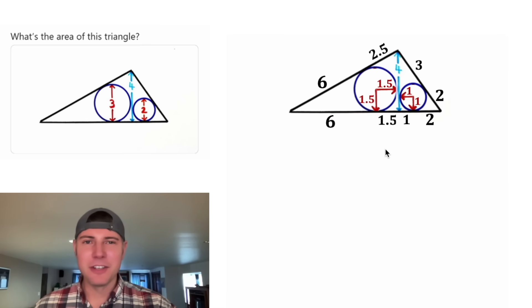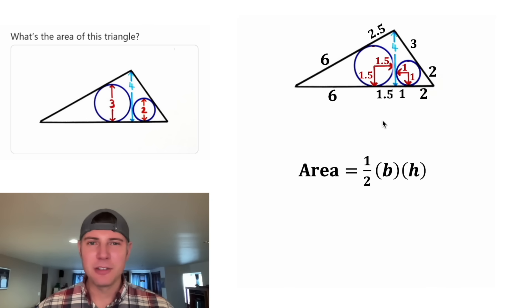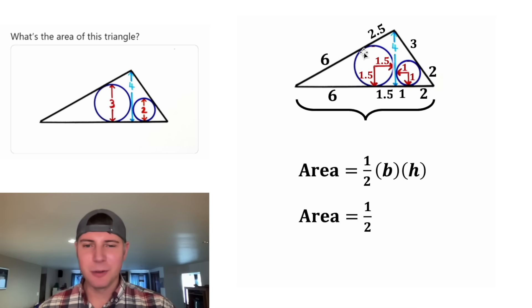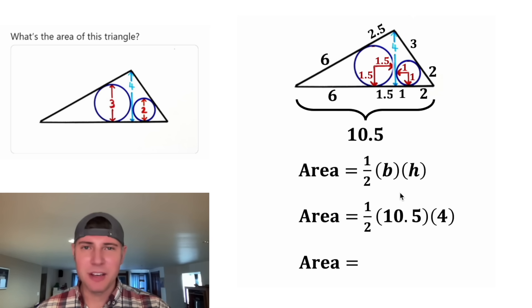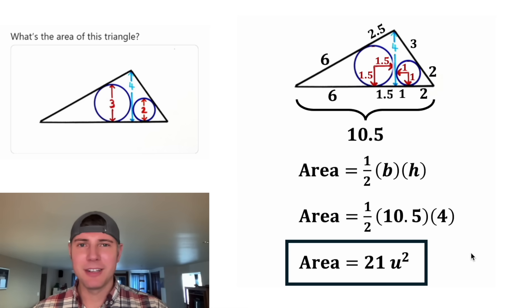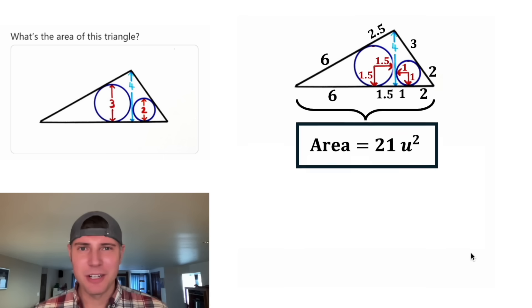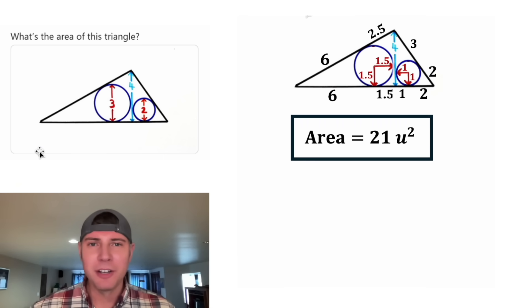And now we're ready to find the area of this triangle. The area of a triangle is 1/2 base times height. The base of this triangle is equal to 6 plus 1.5 plus 1 plus 2. And that's equal to 10.5. And then the height of this triangle was given at the beginning, it's equal to 4. And then 1/2 times 10.5 times 4 gives us 21. Let's give it a label of units squared and put a box around it. And this is the answer to our question. The area of this triangle is 21 units squared. How exciting.